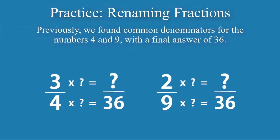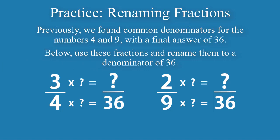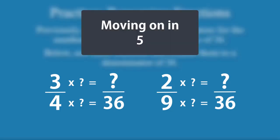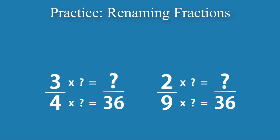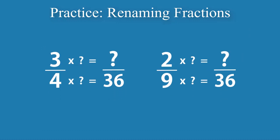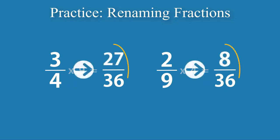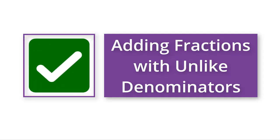Previously, we found common denominators for the numbers 4 and 9 with a final answer of 36. Below, use these fractions and rename them to a denominator of 36. Pause the video here and click play once you think you know the answers. The correct answers are shown here.